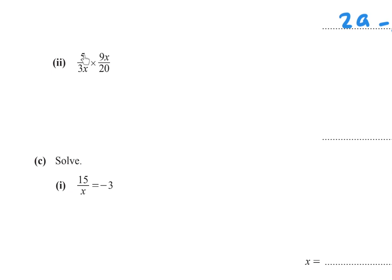Part (b)(ii): Simplify 5 over 3x times 9x over 20. Divide by 5: 5 divided by 5 equals 1, 20 divided by 5 equals 4. Cancel the x. Then divide 3 and 9 by 3: 3 divided by 3 equals 1, 9 divided by 3 equals 3. Multiply: 1 times 3 over 1 times 4 equals 3 over 4.